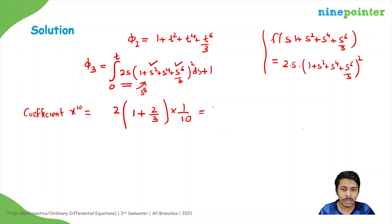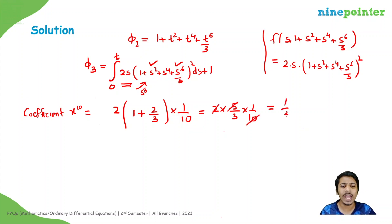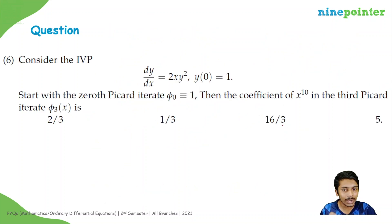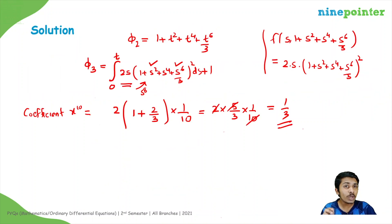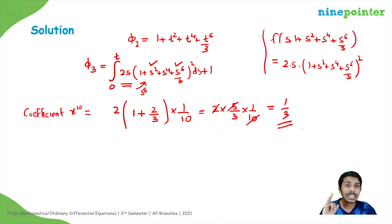So the answer is 1/3, which is option B — the correct answer. This topic appeared both in the quiz and in the end semester examination, so be very careful while studying Picard iteration and solve more problems from this topic.